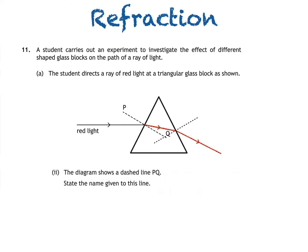Part 2 says, the diagram shows a dashed line PQ. State the name given to this line. Now, as I said before, this line's called the normal. Hopefully, that was a nice easy question for you.